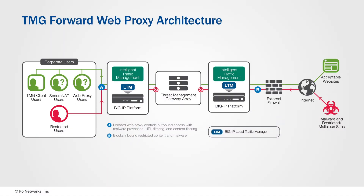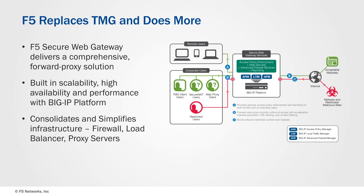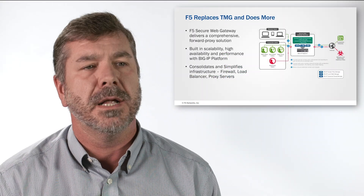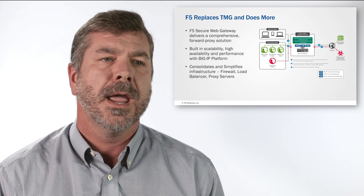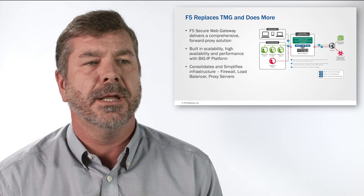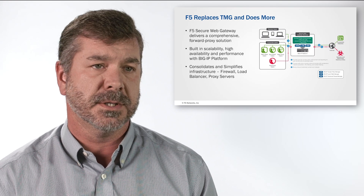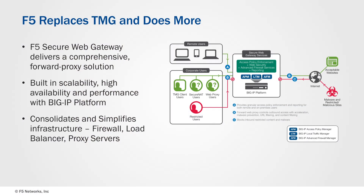With the introduction of the F5 Secure Web Gateway, or SWG solution, you have the ability to deploy a comprehensive forward proxy solution on the same BIG-IP platform used for load balancing, reverse proxy, pre-authentication, as well as layer 3, layer 4, and layer 7 firewall functions. By doing this, you have the advantage of a highly scalable and performance-oriented architecture that simplifies your infrastructure compared to a TMG environment.